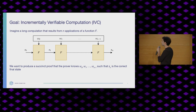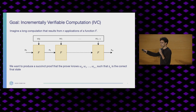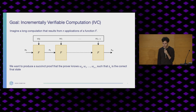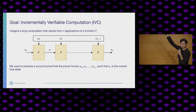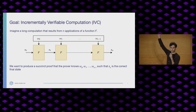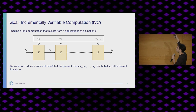Going right into it — our goal is what we call incrementally verifiable computation (IVC). It's the formal way of saying we want to do recursion. We have this one function f that we apply many, many times. We have a state s0 that goes into f, we have some private inputs ω0, and that outputs a new state s1. That state s1 is then fed again into f with a new private input. We keep going until we've reached n iterations.